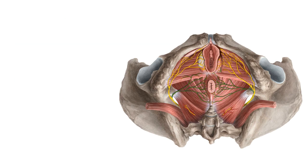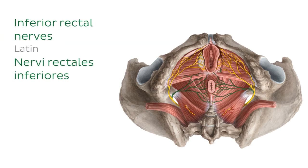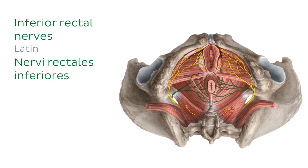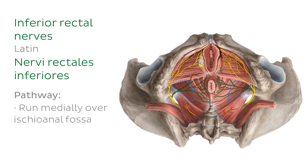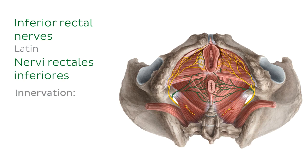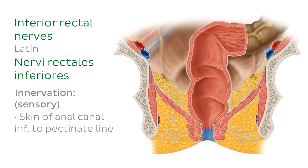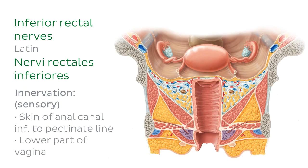The inferior rectal nerves are the first branches of the pudendal nerve, also sometimes called the inferior anal nerves. These nerves branch off the pudendal nerve within the pudendal canal and run medially towards the midline over the ischioanal fossa. They provide motor innervation to the external anal sphincter and sensory innervation to the skin of the anal canal inferior to the pectinate line. In addition, these nerves sometimes provide sensory innervation to the lower part of the vagina.